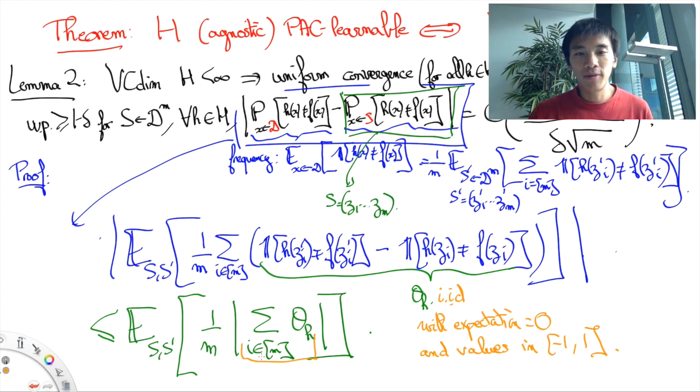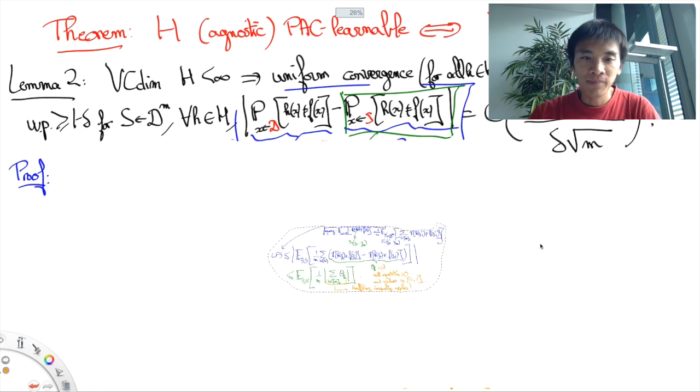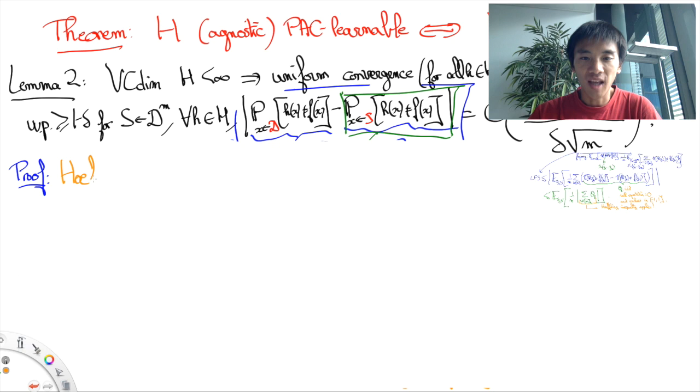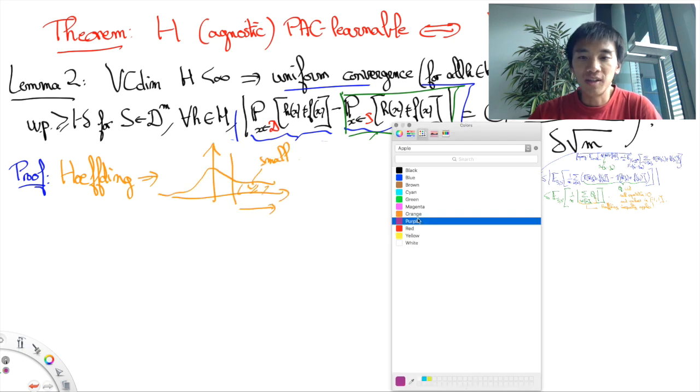However, the central limit theorem only applies to the infinite limit case, so it cannot be applied to our setting. However, there are finite case variants of it that yield nice upper bounds on the probability of large deviations from the means, like the Hoeffding inequality. For any choice of a hypothesis H, the Hoeffding inequality applies.